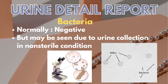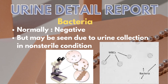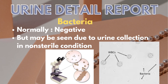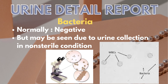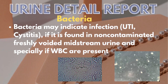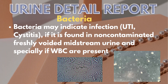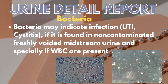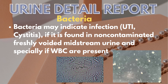Then comes bacteria, which are usually negative in a normal urine sample but may be seen due to urine collection and handling in a non-sterile condition. Positive bacteria along with symptoms may indicate infection like UTI or cystitis, if found in a non-contaminated, freshly voided, midstream urine — and especially if WBCs are also present.